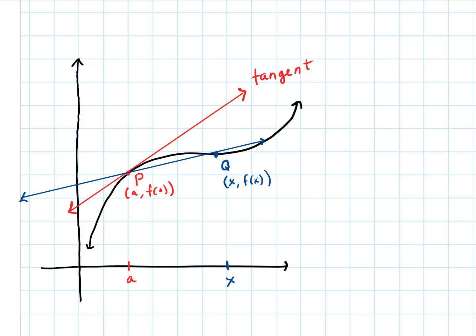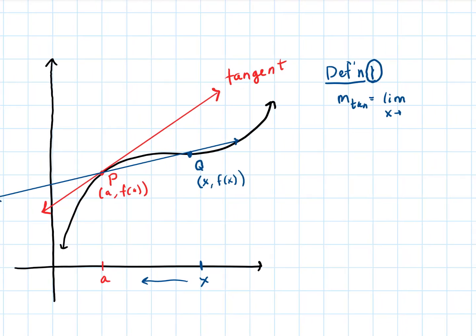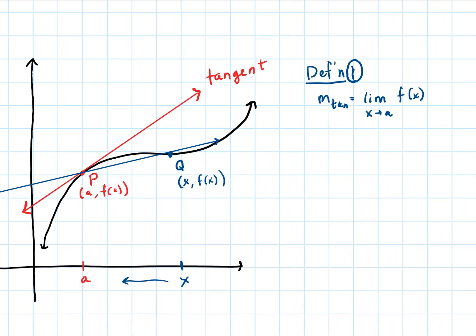We had called this point Q as x, f of x, and then we said let x approach a. So as a reminder, definition one — the first definition for the slope of this tangent line, this instantaneous rate of change — said that the slope of the tangent line was the limit as x approached a of the slope between P and Q, which is the difference in the y's: f of x minus f of a, over x minus a.